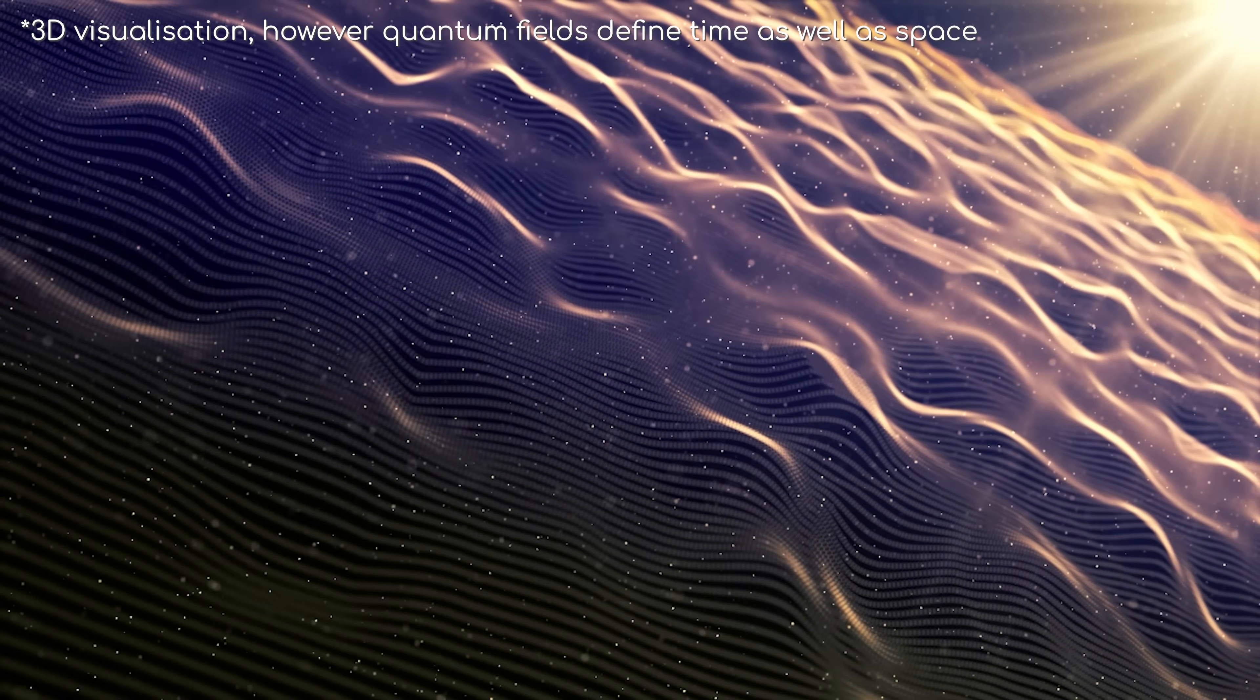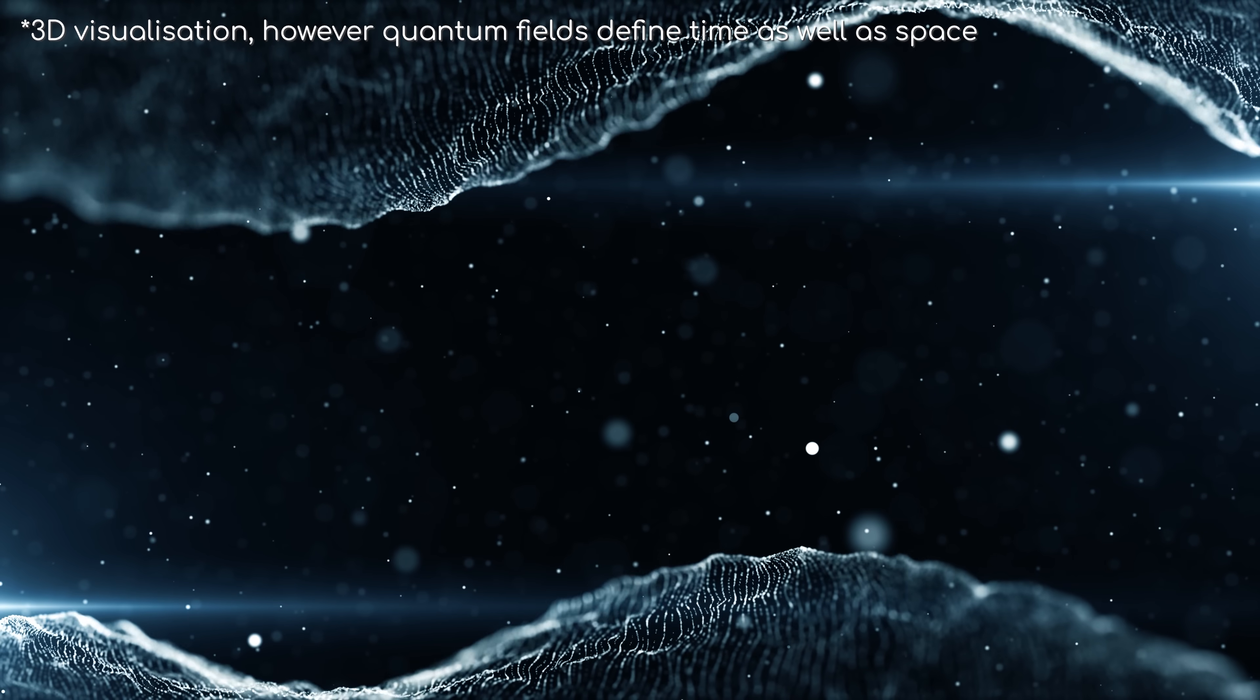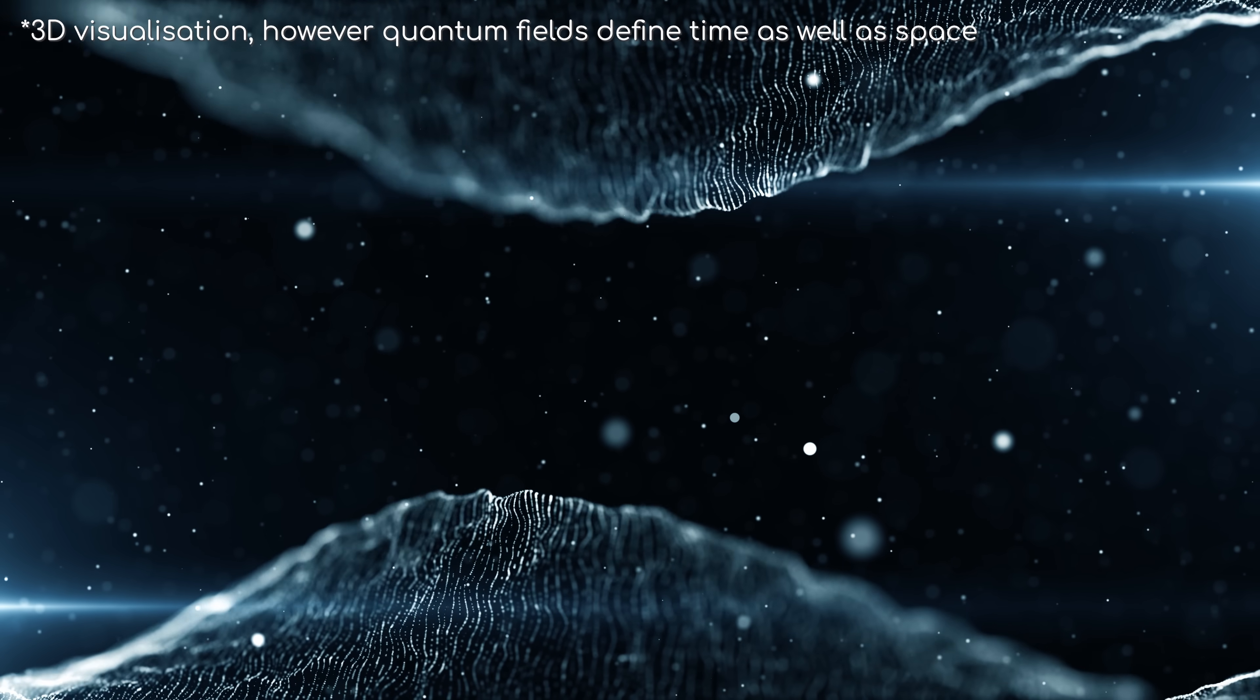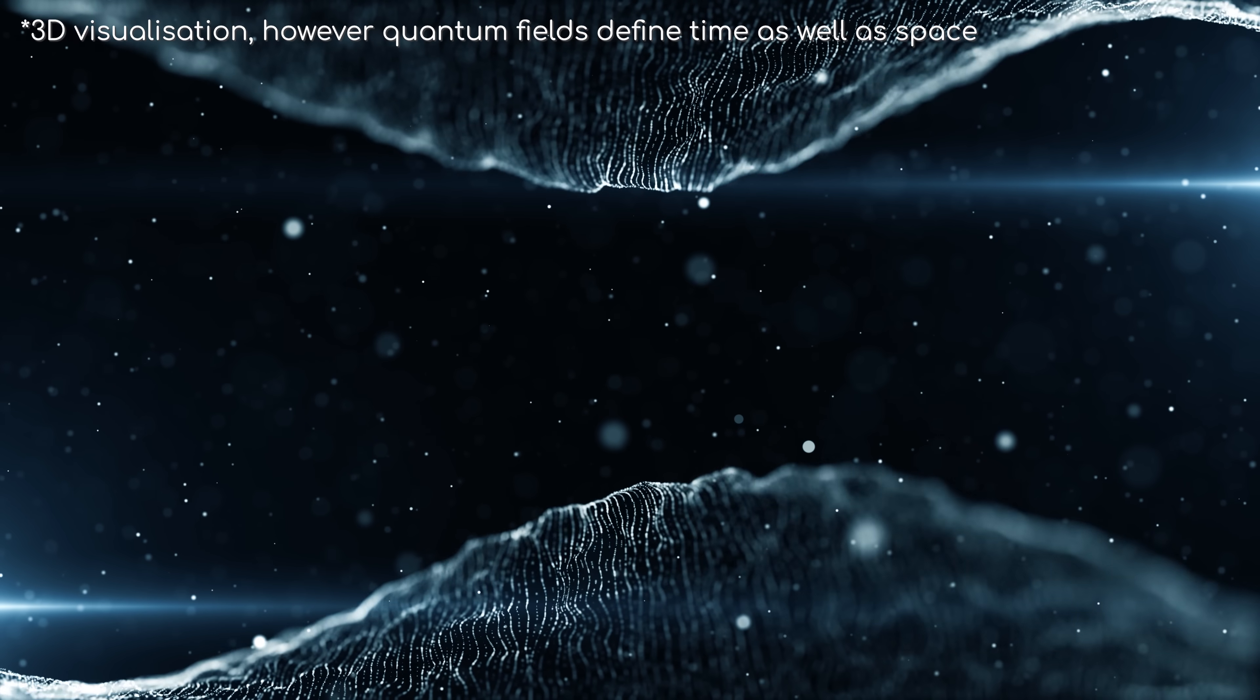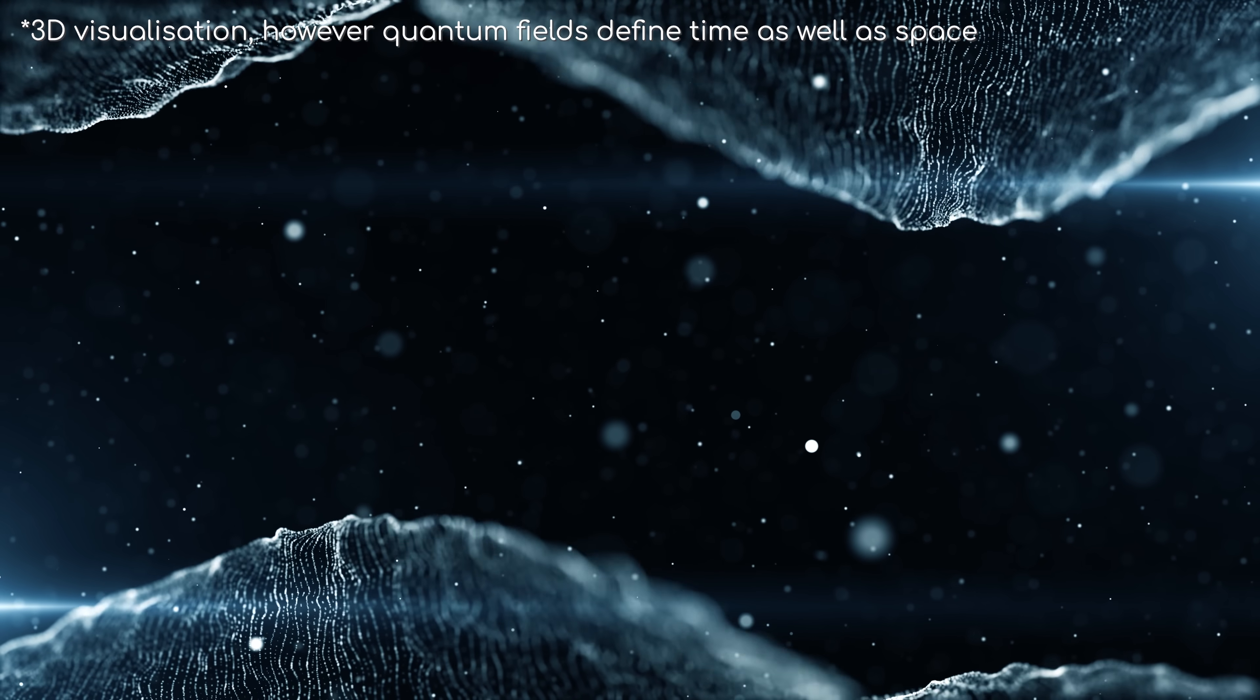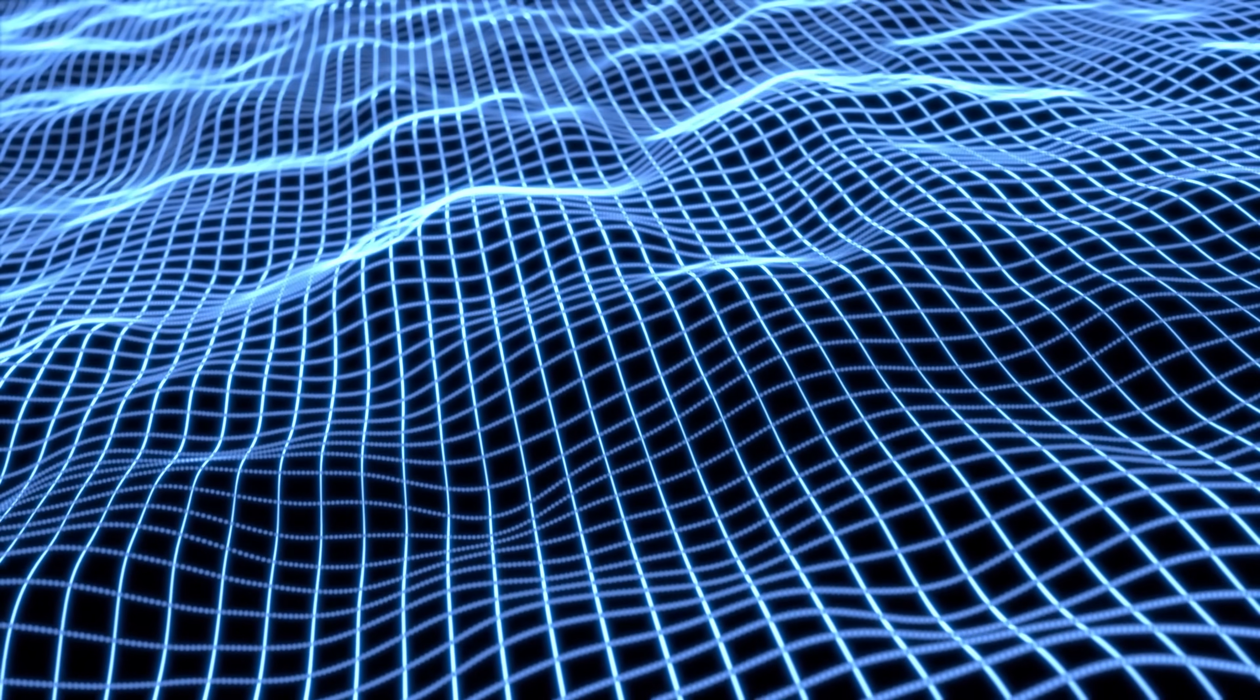But basically, scientists call this fundamental fabric of reality a quantum field. In fact, they believe that there are several quantum fields, all overlapping each other, and all covering every single patch of the universe, be it past, present, or future.